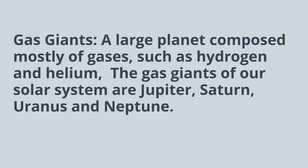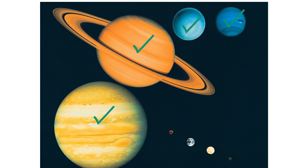Next, we have gas giants — a large planet composed mostly of gases, such as hydrogen and helium. The gas giants of our solar system are Jupiter, Saturn, Uranus, and Neptune. And here are the gas giants, and you can see their size compared to the terrestrial planets.